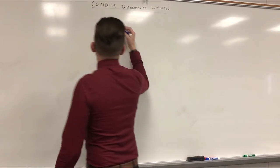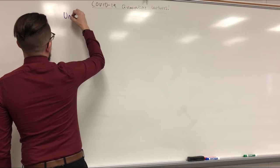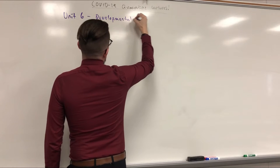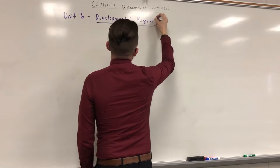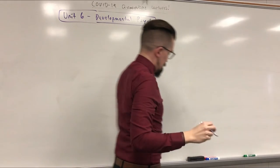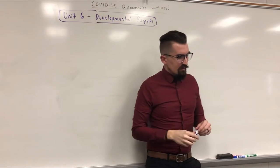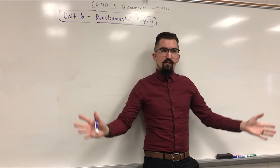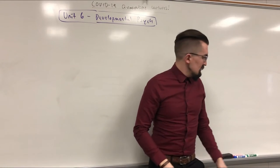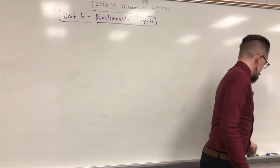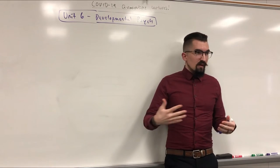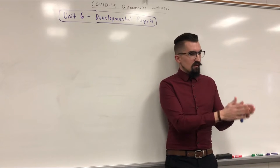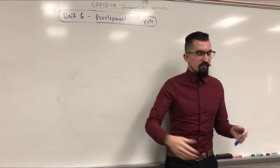Unit 6 is developmental psychology. This one's a bit awkward the way they lay it out, so I've changed it a little bit — all the content is exactly the same. The way they present it in unit guides and most textbooks is they kind of throw a bunch of different psychologists and their developmental theories at you, which is basically how you progress physically, psychologically, cognitively from conception all the way until death.